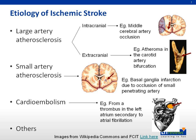Cardioembolic stroke is due to a cardiac thrombus embolizing to cause cerebral arterial obstruction. Sources of cardioembolism include atrial fibrillation, mechanical prosthetic valves, poor cardiac ejection fraction, and valvular heart disease. Other known but less common etiologies of ischemic stroke are autoimmune diseases like systemic lupus erythematosus, hypercoagulable or prothrombotic conditions, and arterial dissection.